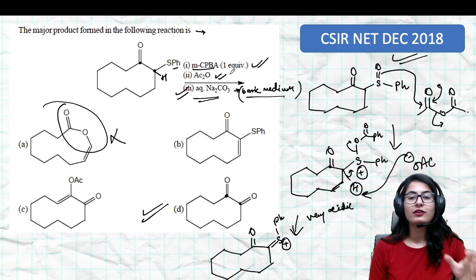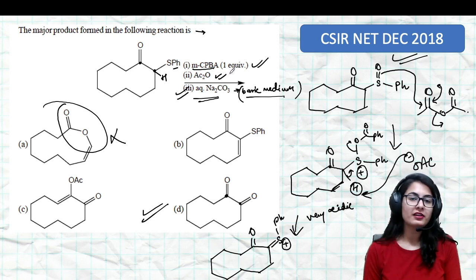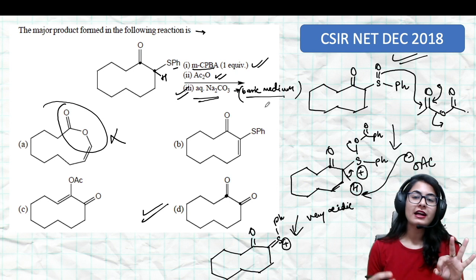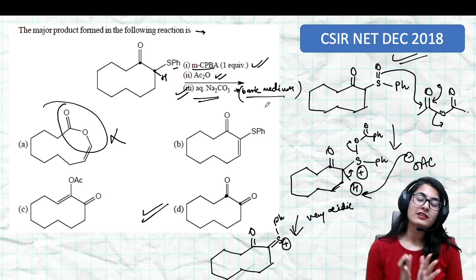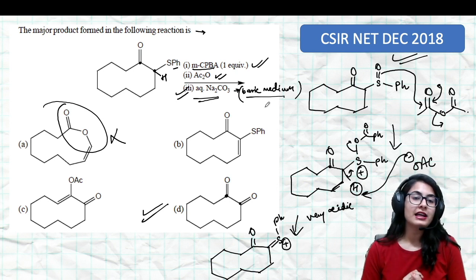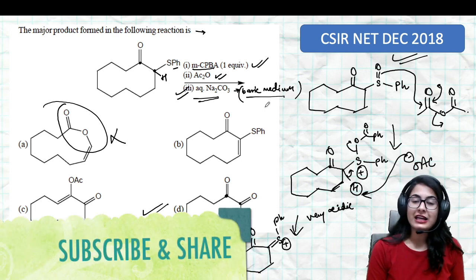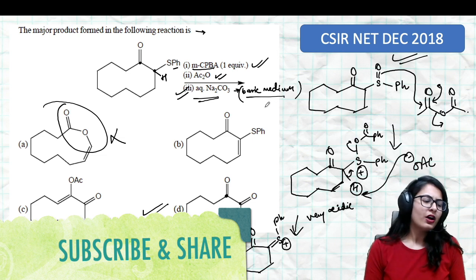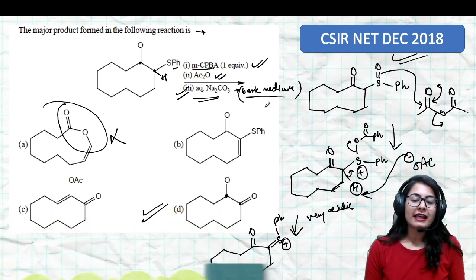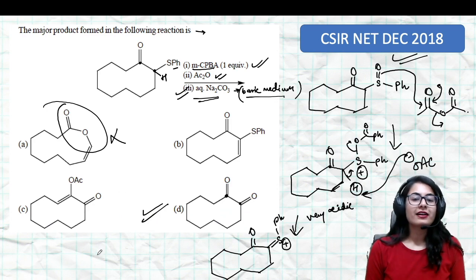These are some of the uses of metachloroperbenzoic acid. Second step where we use acetic anhydride is your Pummerer rearrangement. Third step is hydrolysis in the basic medium. I just hope that you got this very simple reaction. We'll be doing more videos like this. Don't forget to subscribe to the channel and share this video as much as possible. I know it's going to be really helpful for all students preparing for their examination. Thank you so much, I'll see you in the next video.